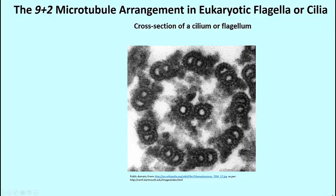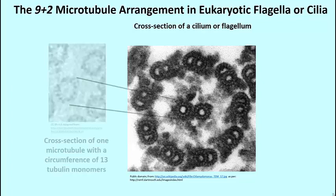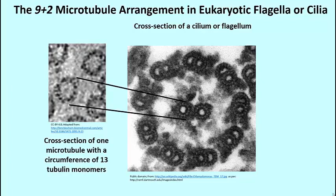This is a cross-section of a cilium or a flagellum — it can be either one, because in eukaryotes, cilia and flagella show the same cross-sectional structure of microtubules. Here is a cross-section of a single microtubule, with its 13 tubulin monomers, shown as an inset illustrating that in the cross-section of a cilium or flagellum there are many microtubules. There are doublet microtubules, and if you count them, there are nine in the circumference, plus two single microtubules in the middle, along with various other structures.